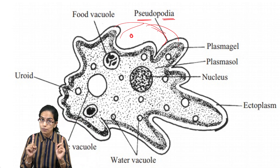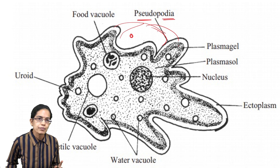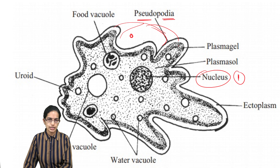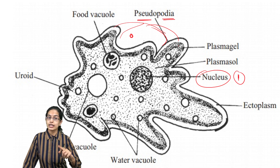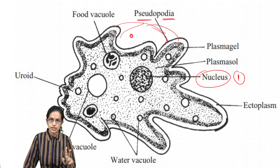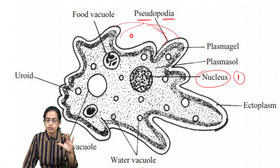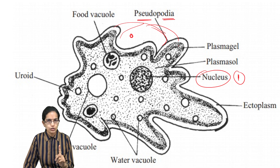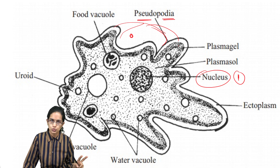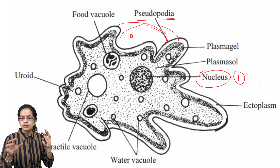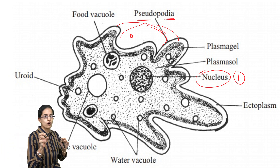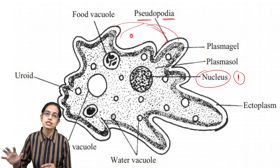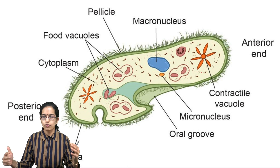Be very careful here. In amoeba, we have a single nucleus present. However, in the case of paramecium, you have two nuclei present. Amoeba has one nucleus; paramecium has two nuclei. The cytoplasm of amoeba is filled with lots of small vacuoles. The most important feature of amoeba is the pseudopodia, which are the false legs used for movement.